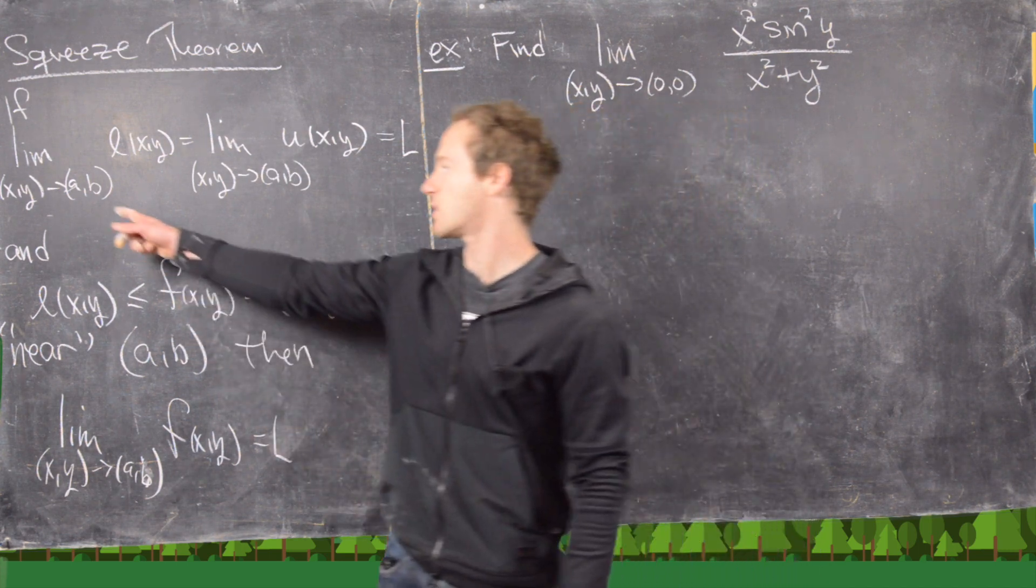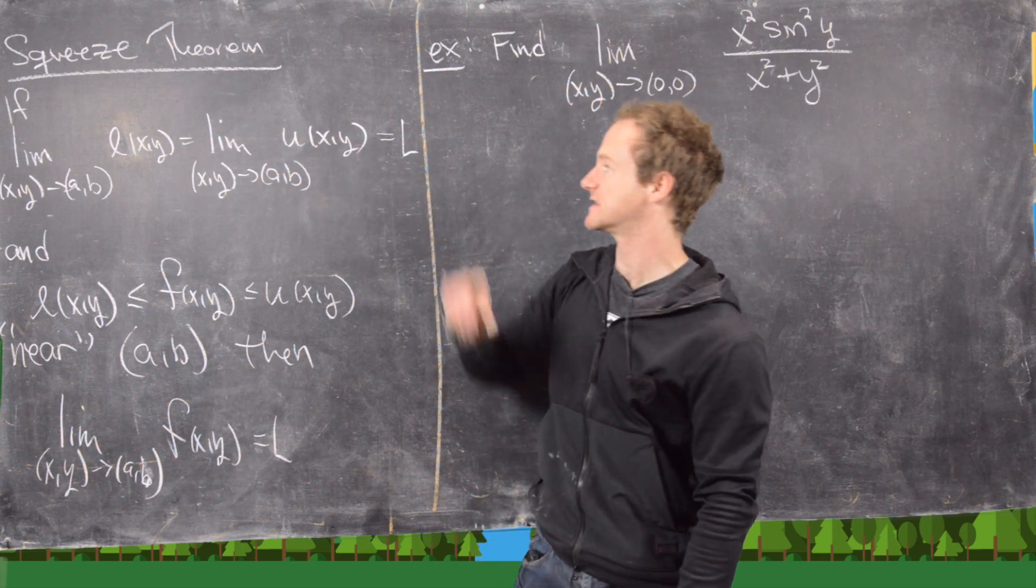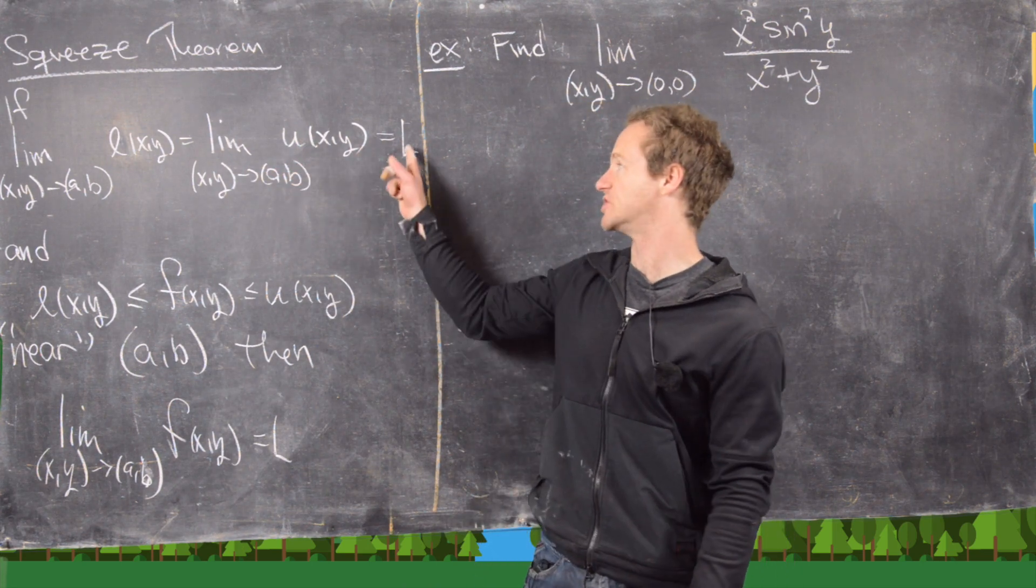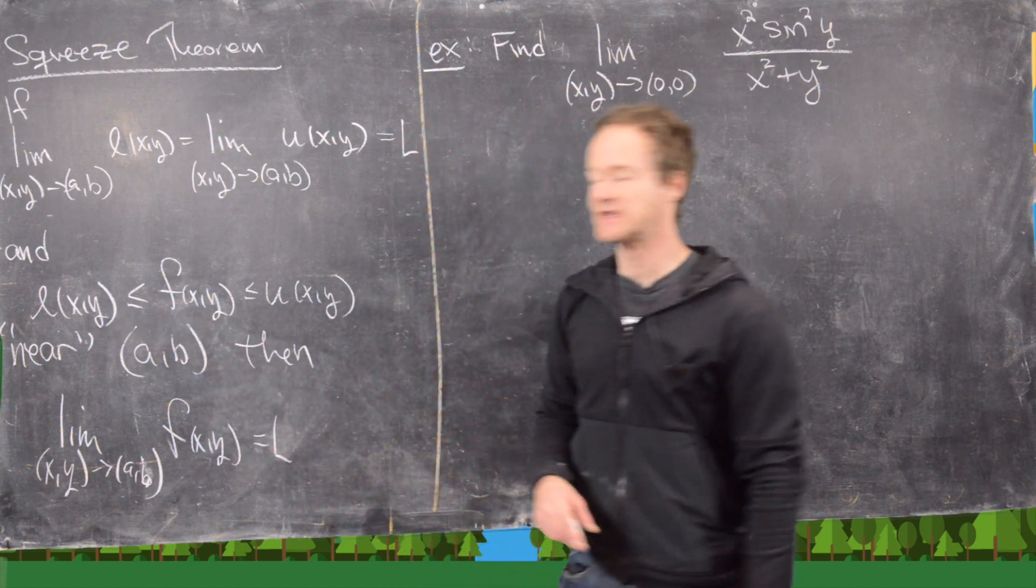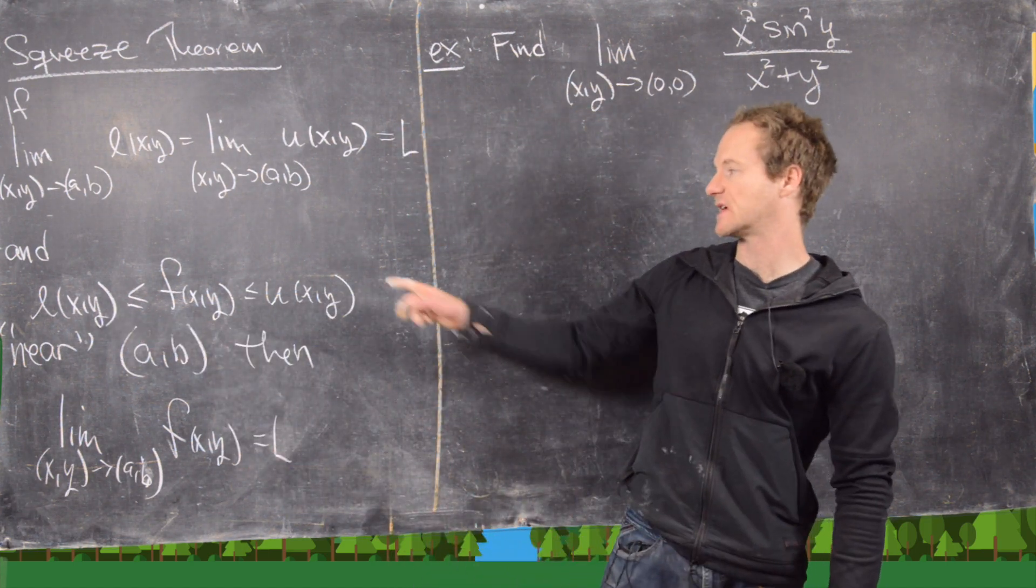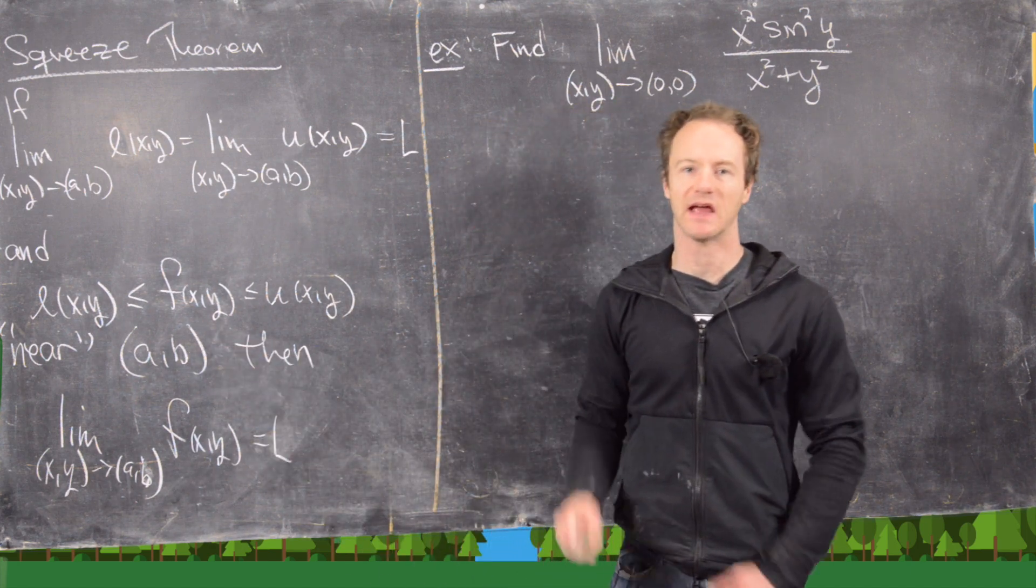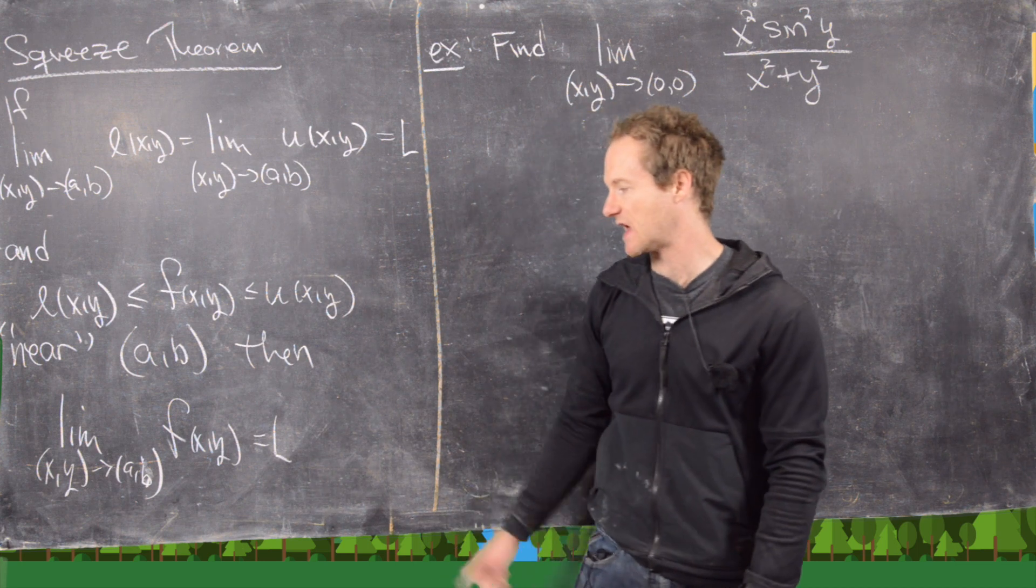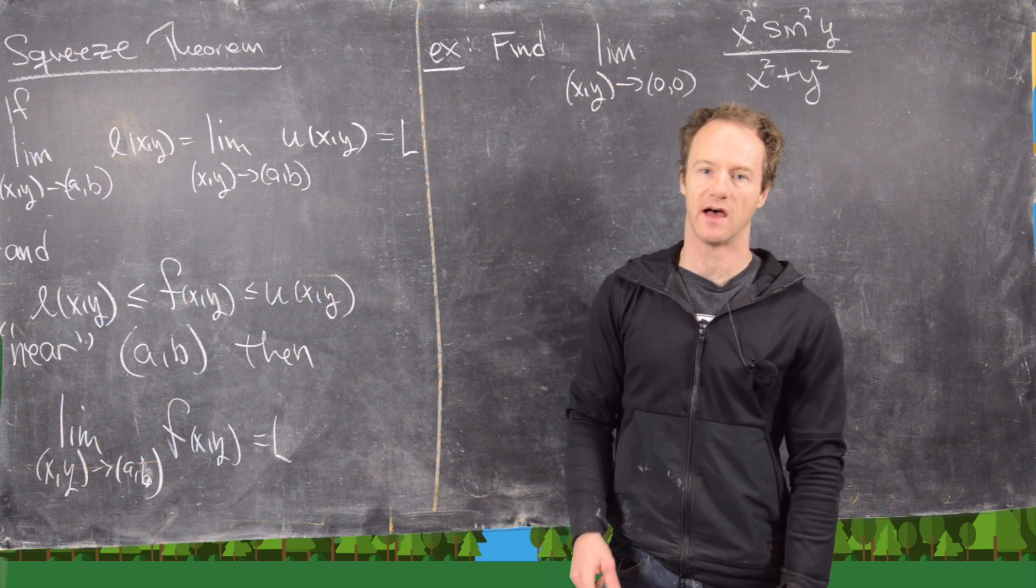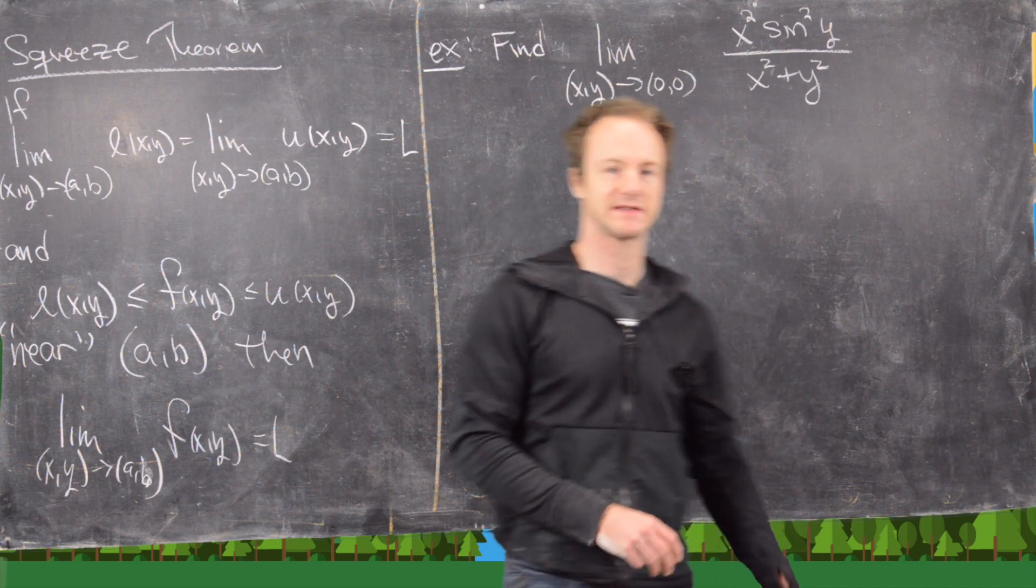So let's say that the limit as xy approaches ab of l(xy) is the same thing as that limit for u(xy), which is L, and l(xy) is less than or equal to f(xy), which is less than or equal to u(xy), near ab. Then, the limit as xy approaches ab of f(xy) is L. So this is like a nice generalization of the squeeze theorem for one-variable limits.